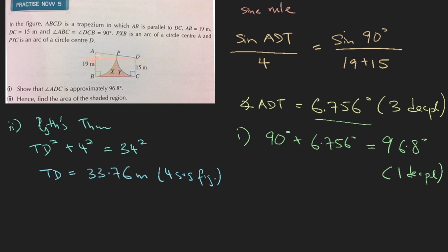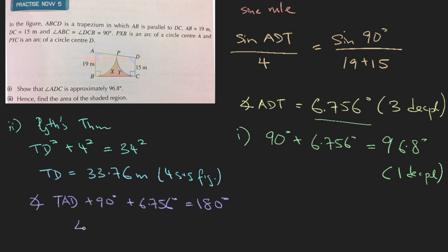Now let's look at the two sectors. We have the angle for the blue sector, but we still need the angle for the green sector — angle BAP. Since we know two of the three angles in triangle ADT, the sum of angles gives us: angle TAD plus 90 degrees plus 6.756 degrees equals 180 degrees, so angle TAD is 83.24 degrees.